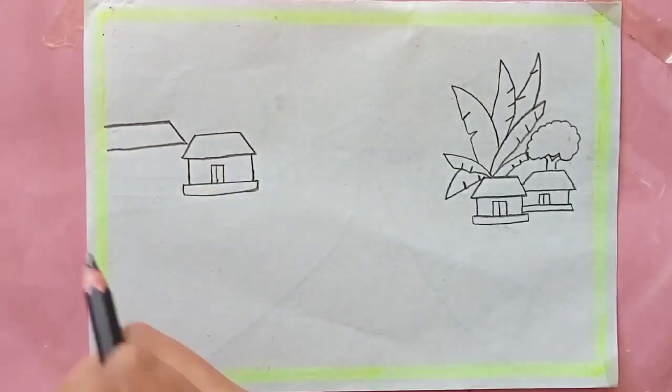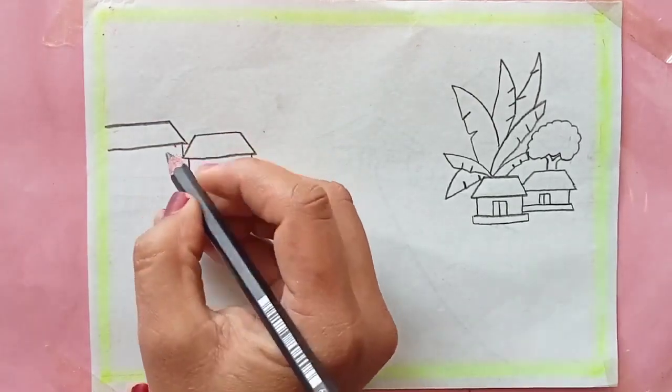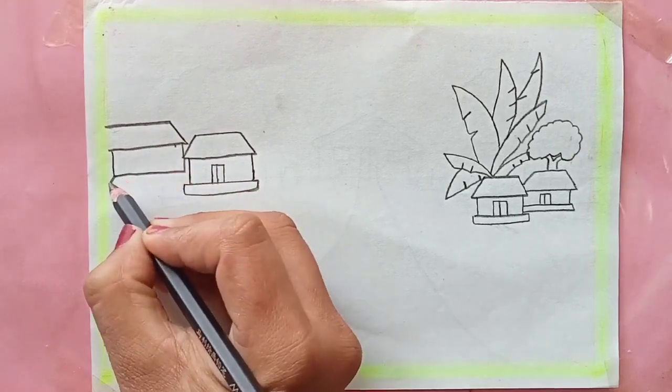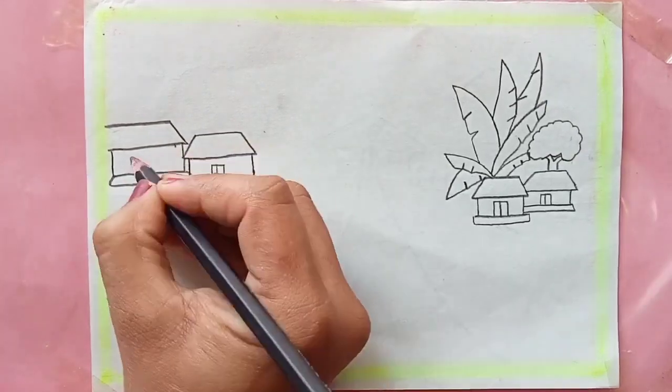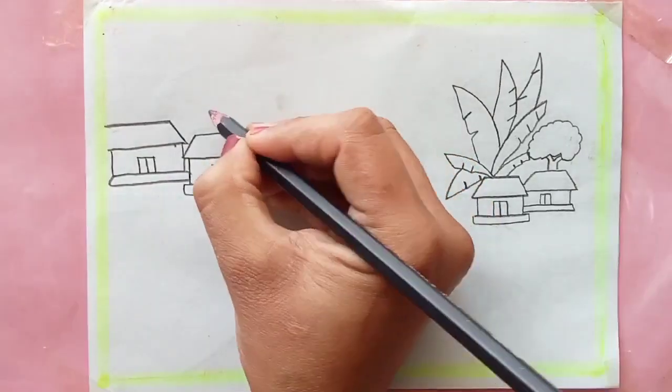Our scenery is just about to be completed so stay with me. Now I'm drawing a zigzag line on both sides parallel to each other to show the river in between the village.